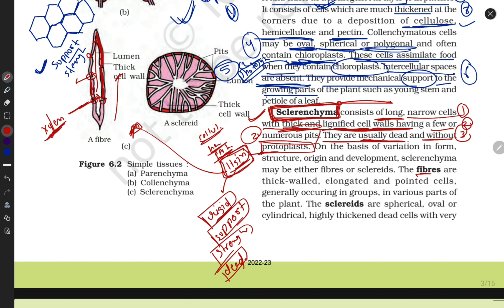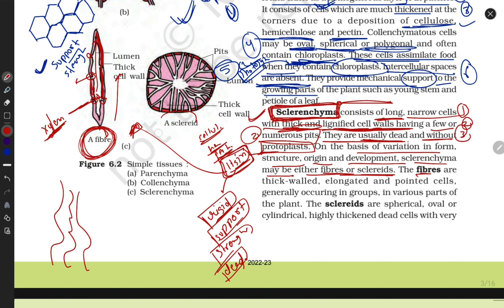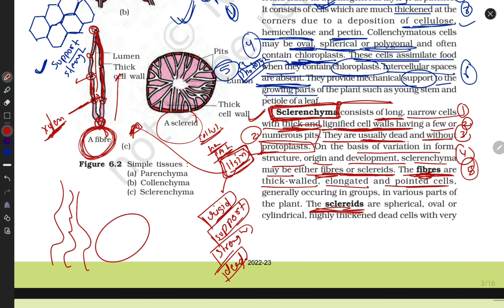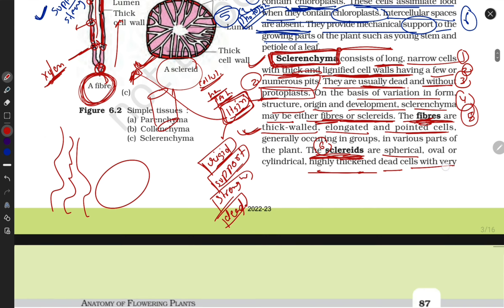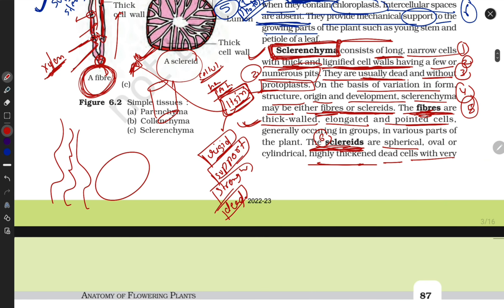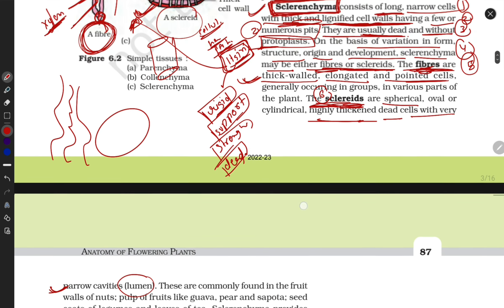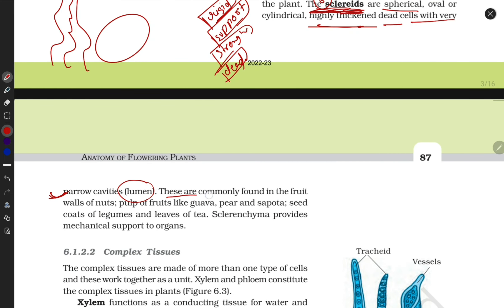On the basis of variation in form, structure, origin, and development, sclerenchyma may be either fibers or sclereids. Fibers are thick-walled, elongated, and pointed at both ends. Sclereids are spherical or oval in shape and have a very narrow lumen — they have high wall thickness but little interior cavity space.